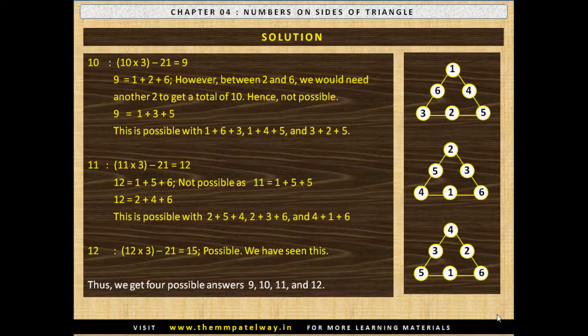Thus we get 4 possible totals: 9, 10, 11 and 12. I would advise you at this point to go to the logical approach once again and review the solution once more.